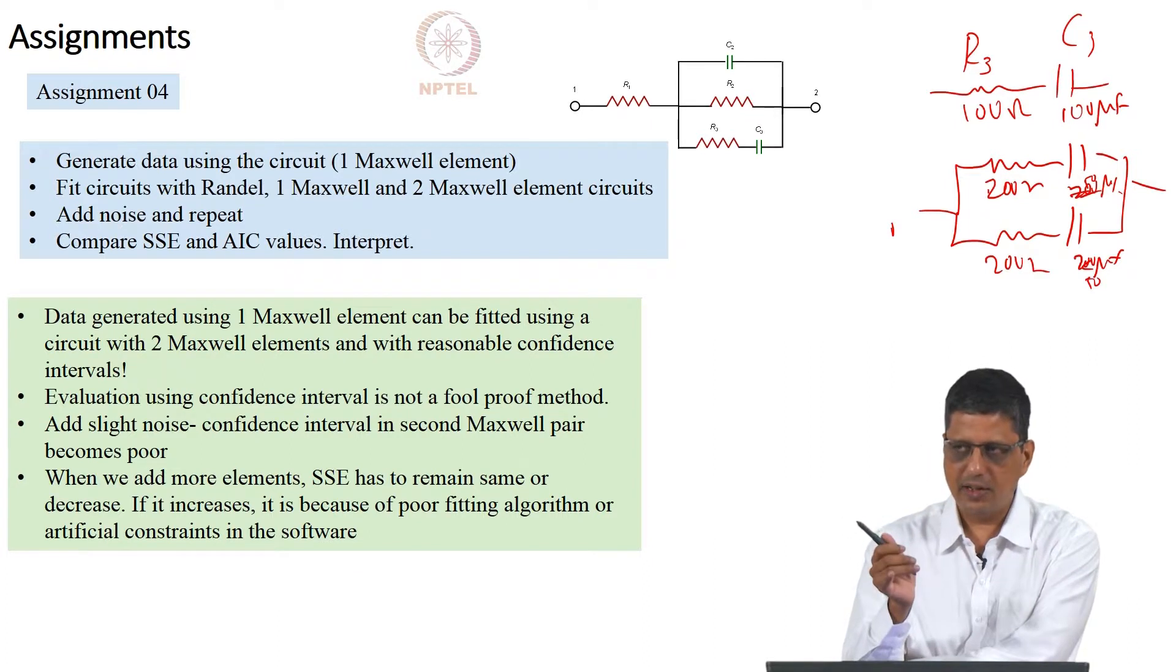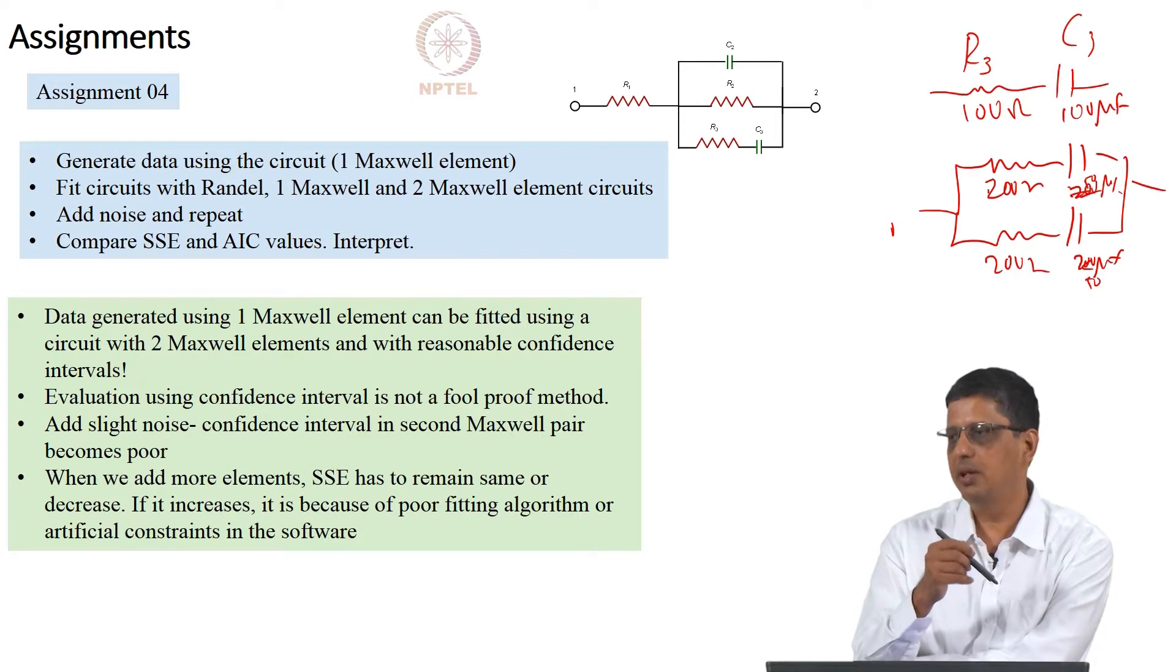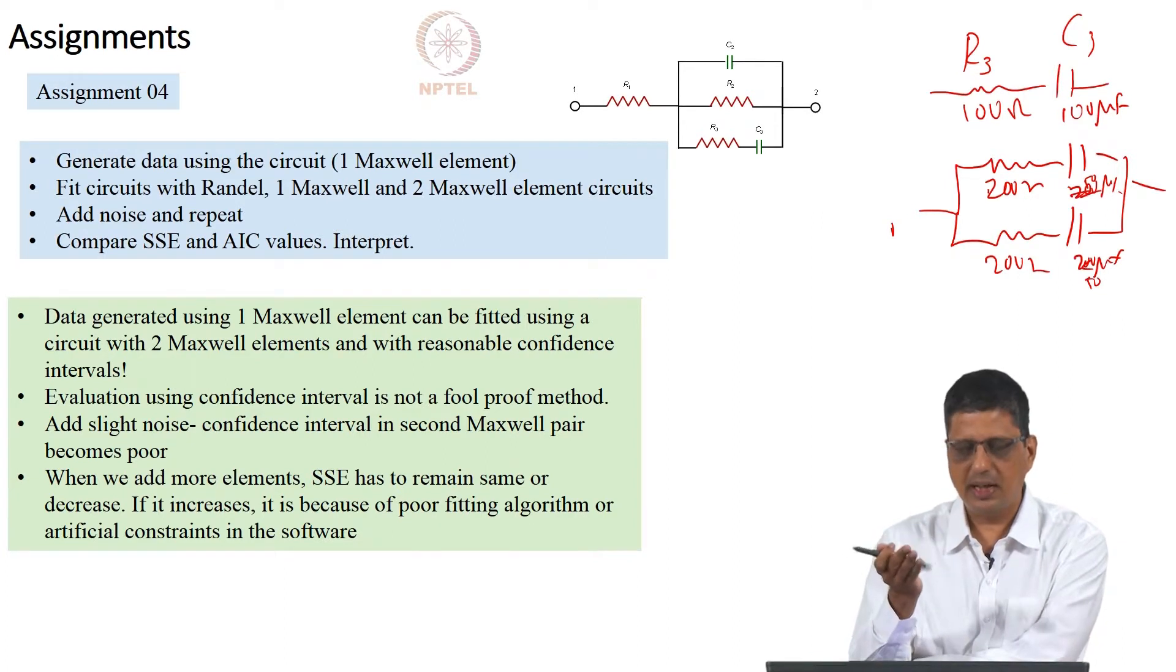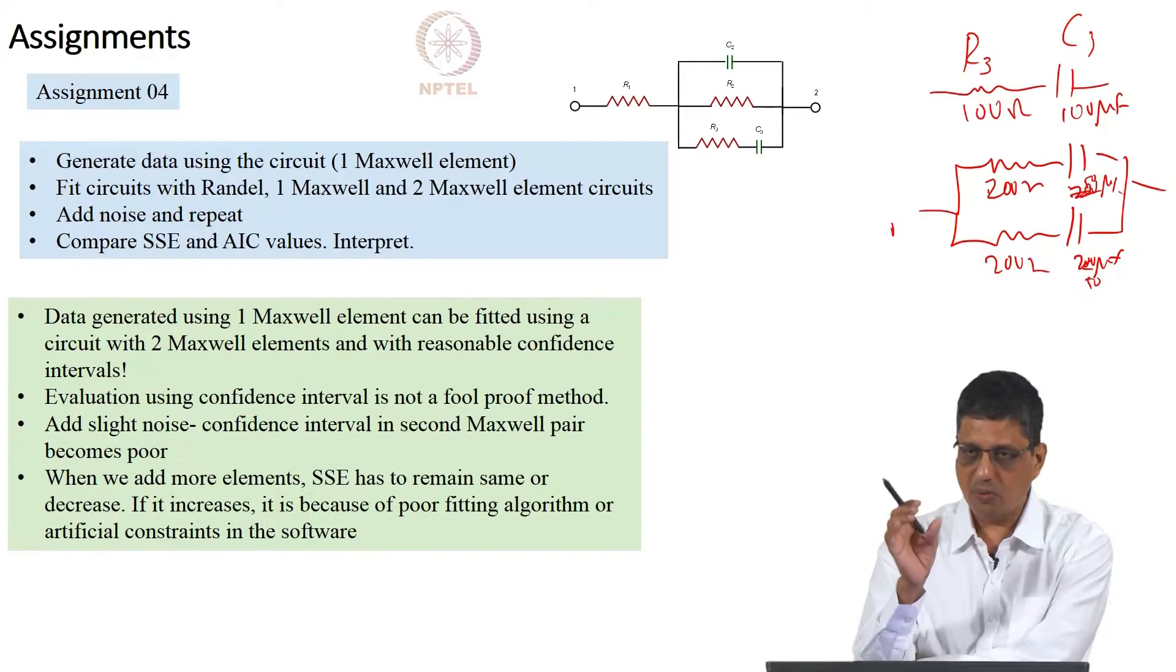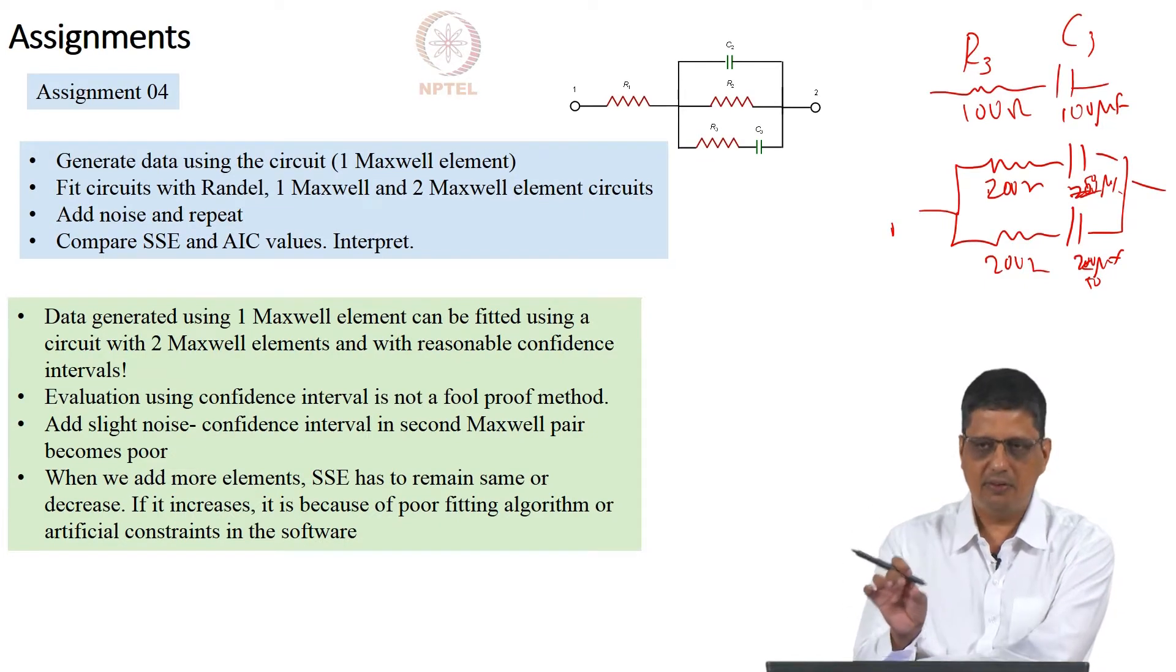Generally, you want to look at confidence interval. If it is poor, it is probably not a good idea to use it. If it is moderate, you cannot assume that it is the best one. If you add noise, slight fluctuation, it will actually help you move away from the local minimum, and you will find actual experimental data will have some noise. You will find that it is possible to actually identify one pair of the elements will have poor confidence interval, one pair will have good confidence interval. So one Maxwell element is actually better circuit for that.